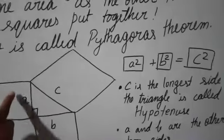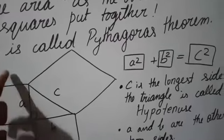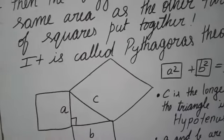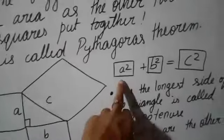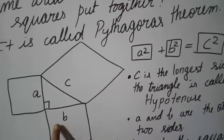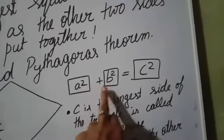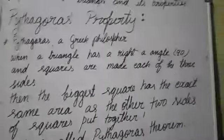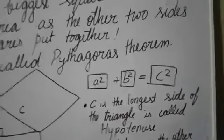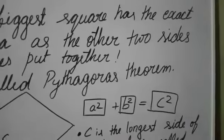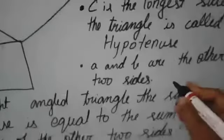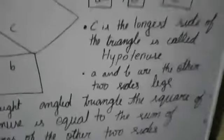A square means the square area. If you are going to find it, it is side times side. So I have written A squared. A is the length of this side. Similarly, B squared is the area of the other square. If we sum them — A squared plus B squared — it is equal to C squared. C is the longest side, named as the hypotenuse. The other two sides we call legs.